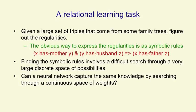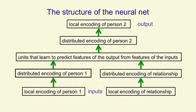The way it's going to do that is we're going to say it's captured the information if it can predict the third term in a triple from the first two terms. So at the bottom of this diagram, we're going to put in a person and a relationship, and the information is going to flow forwards through this neural network, and what we're going to try and get out of the neural network after it's learned is the person who's related to the first person by that relationship. The architecture of this net was designed by hand — I decided how many layers it should have and where to put bottlenecks to force it to learn interesting representations.